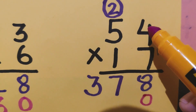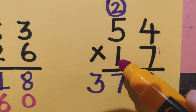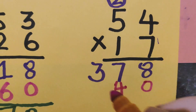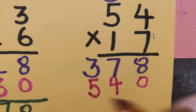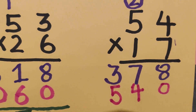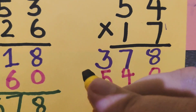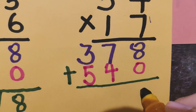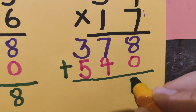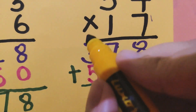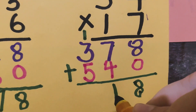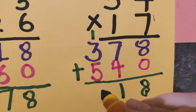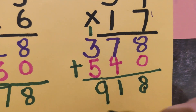This is the third step: we need to multiply with the tens digit. So 1 times 4 is 4, and 1 times 5 is 5. Now the last step, A which is add. 8 plus 0 is 8, 7 plus 4 is 11 — 1 carry, 1 down. 5 plus 3 is 8, 8 plus 1 is 9. So the answer is 918.